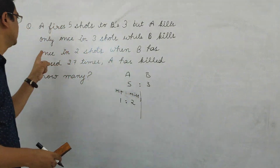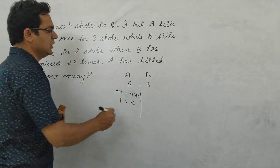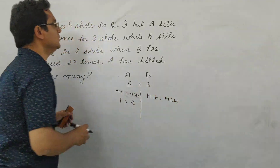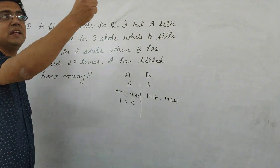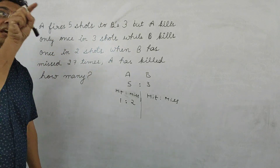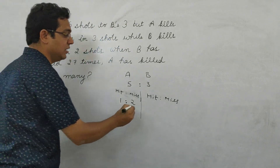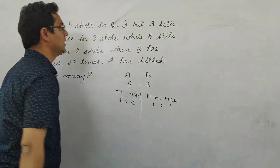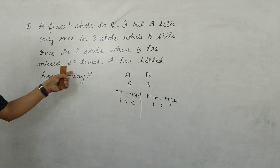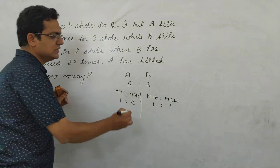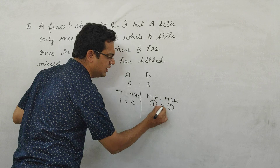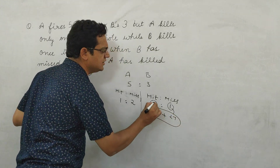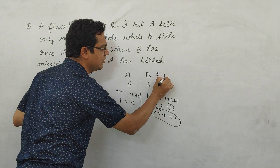B kills once in 2 shots — so B has 1 hit and 1 miss per 2 shots. A kills once in 3 shots — 1 hit and 2 misses. Now B has missed 27 times. If B has 1 miss per 2 shots, then 27 misses means B also hit 27 times.